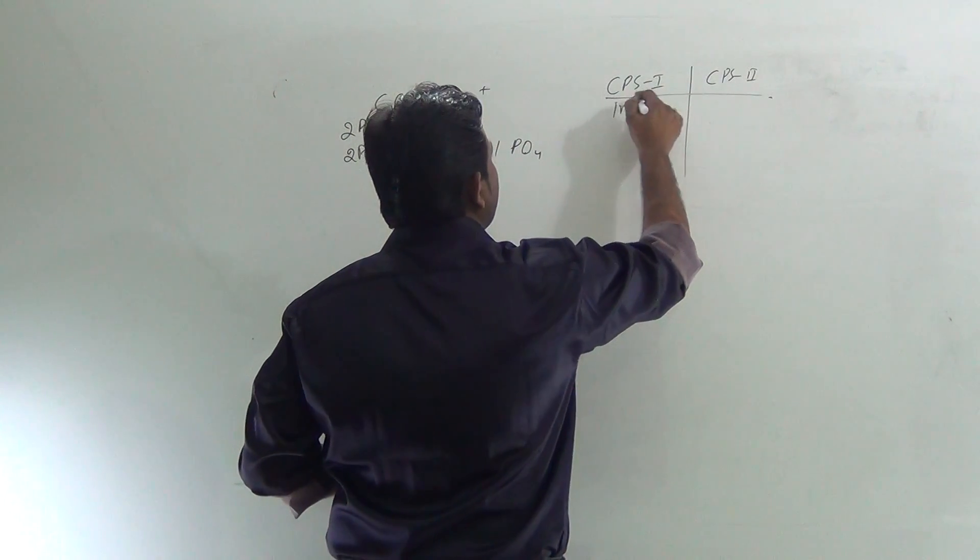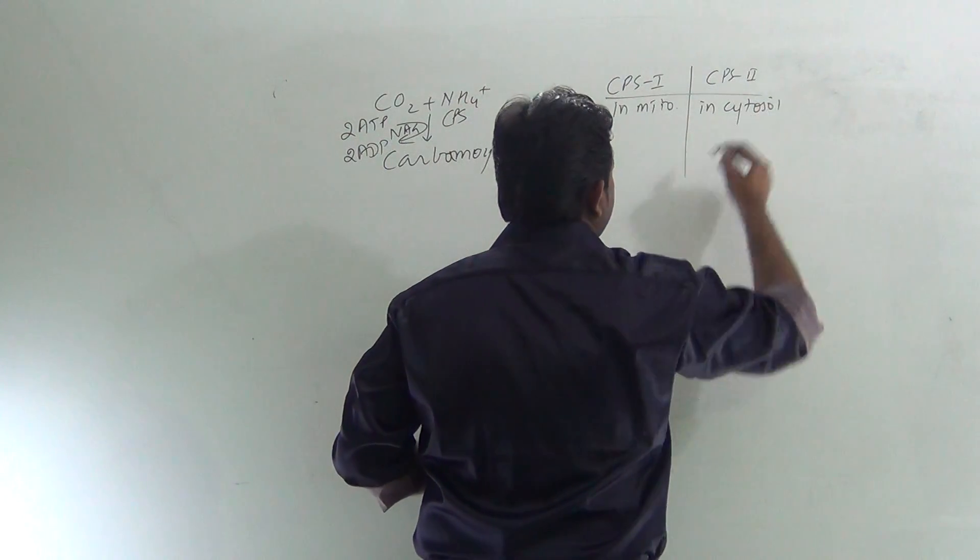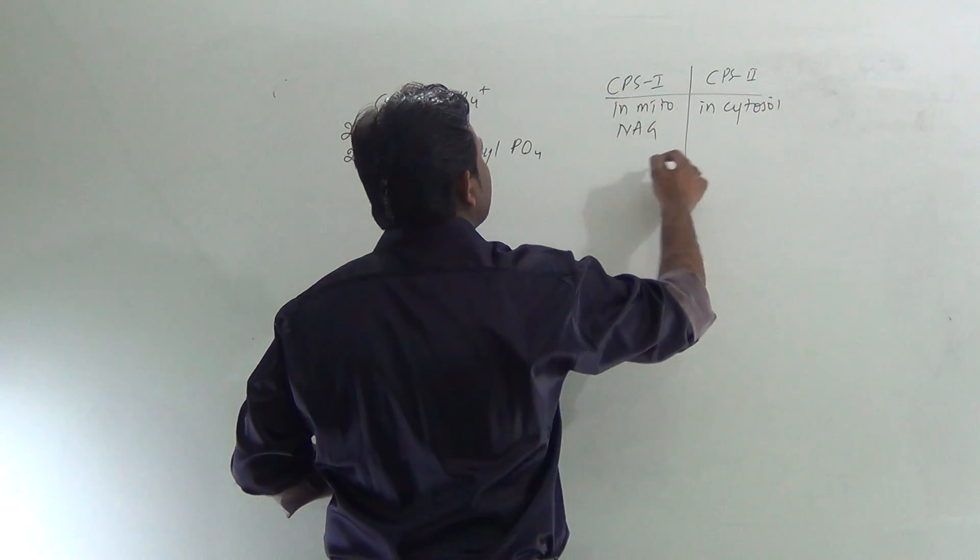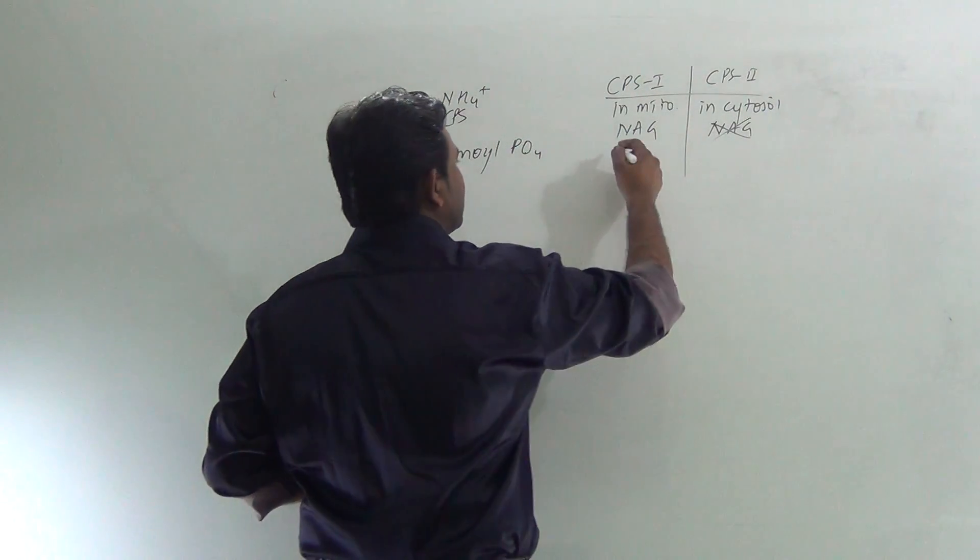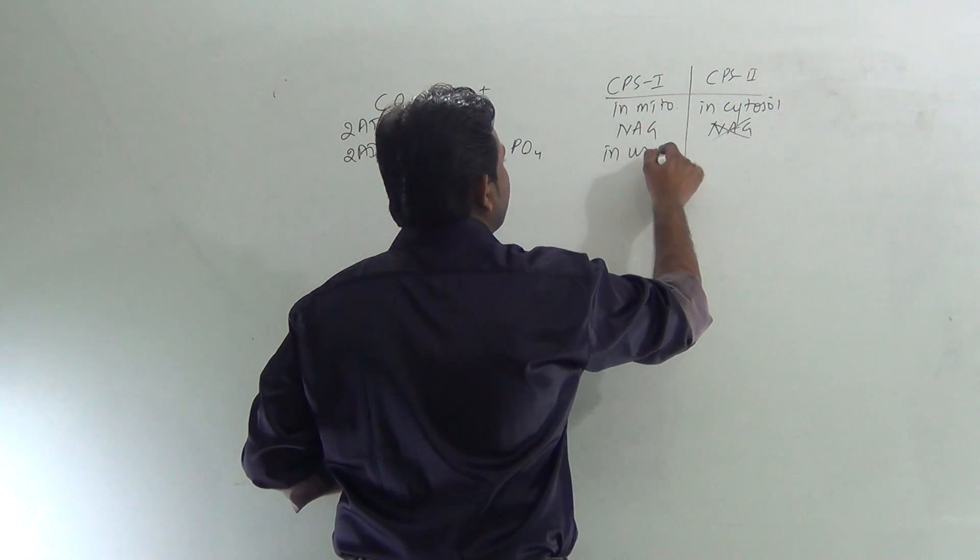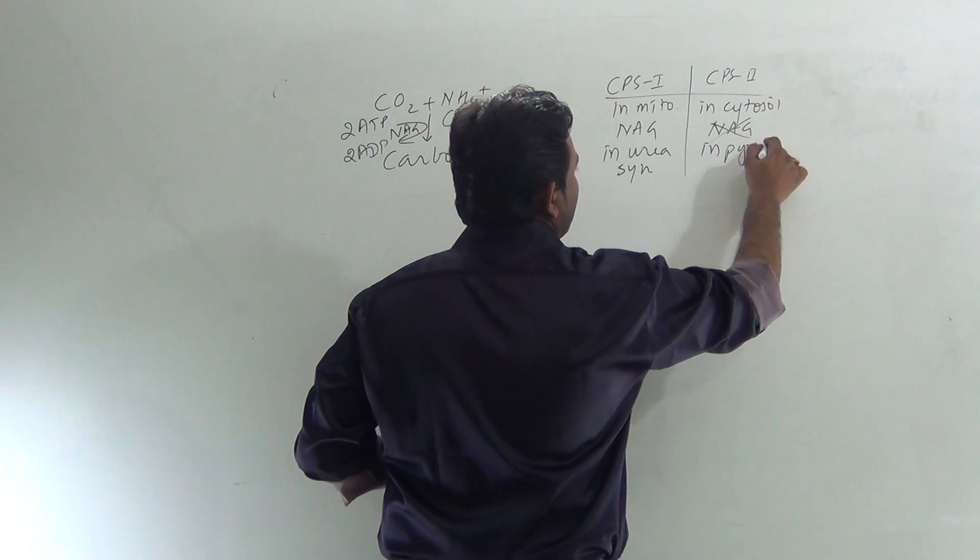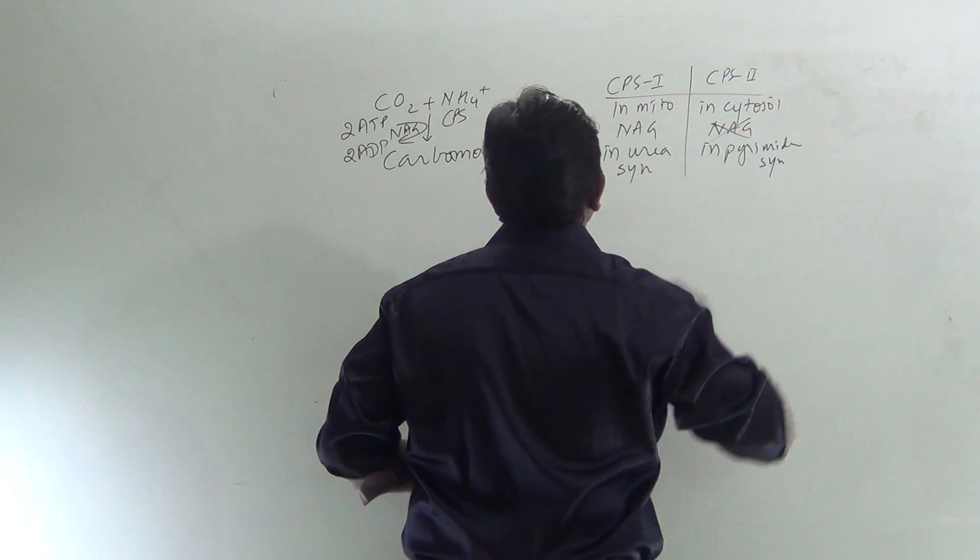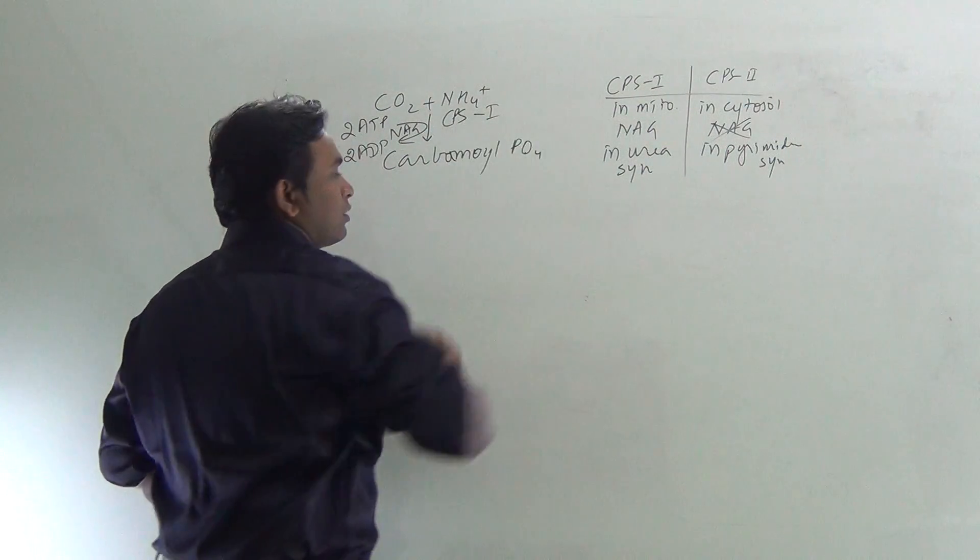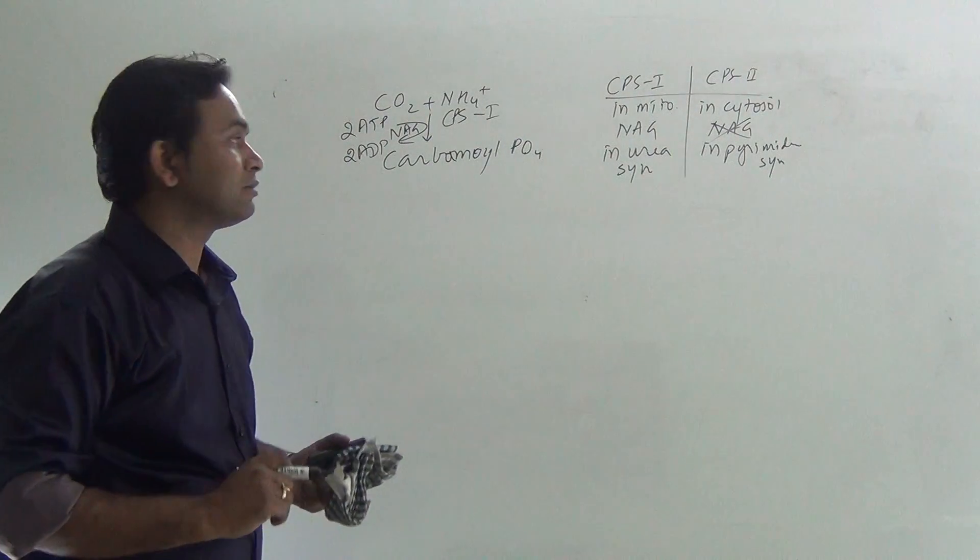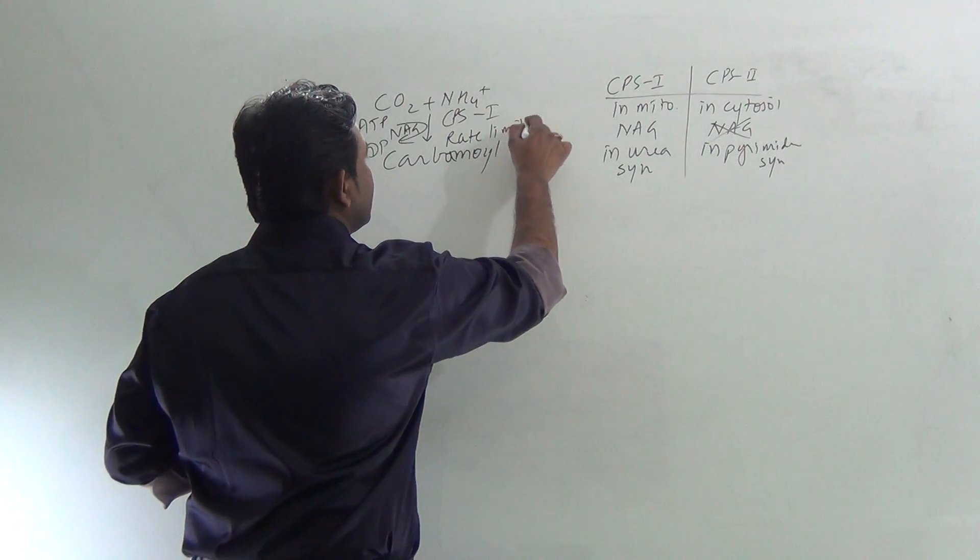CPS1 is found in mitochondria, while CPS2 is found in cytosol. It requires N-acetylglutamate. Here there is no requirement of N-acetylglutamate for action. It is involved in urea synthesis, and it is involved in pyrimidine synthesis. So here it is CPS1 because we are concerned with urea synthesis here. This is also the rate limiting step.